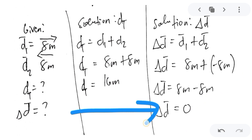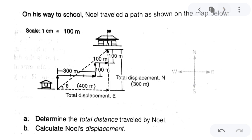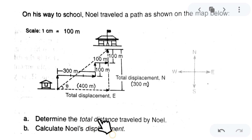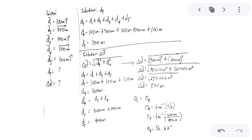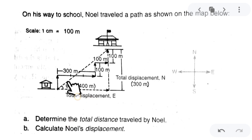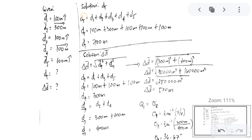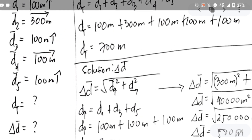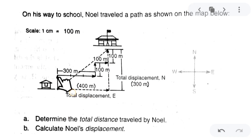The displacement is 0 because he returned to his original position. Now for a more complex problem: on his way to school, Noel traveled a path shown on a map where the scale is 1 cm equals 100 meters. We must determine the total distance traveled and calculate Noel's displacement. The given displacements are: first displacement going north — 100 meters; second displacement going east — 300 meters.